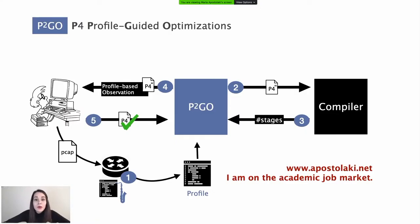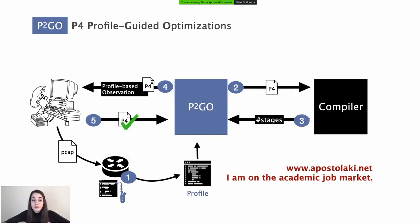P2Go leverages the program's profile to optimize it while not breaking the program semantics under the expected case. P2Go only requires the programmer to approve the optimized program given the observation used together with the achieved gain. Finally, I want to mention that I'm in the academic job market, so please reach out if your university is hiring. Thanks a lot.